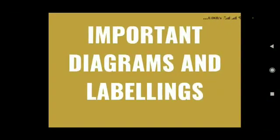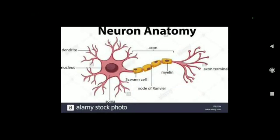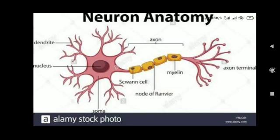Good morning everyone. In this video we discuss important diagrams and labellings. This is a diagram of a neuron. As you know, a neuron is the structural and functional unit of the nervous system. The another name of neuron is nerve cell. All cells possess the ability to respond to stimuli; however, cells of the nervous tissue are highly specialized for being stimulated.